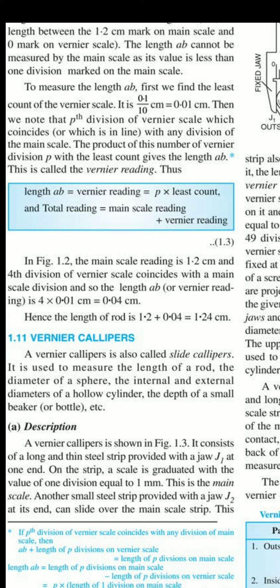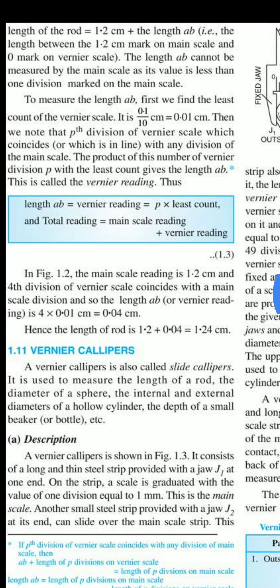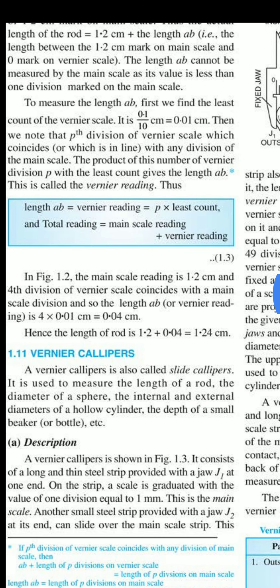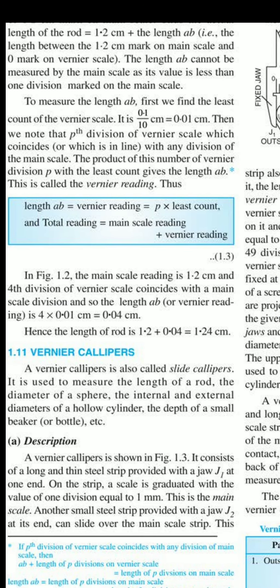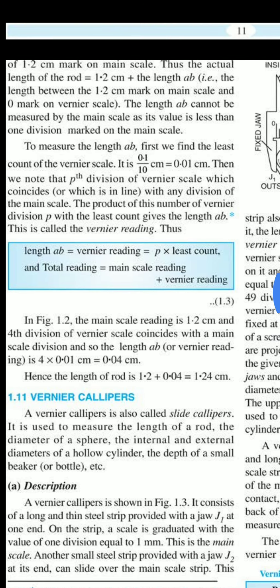So we multiplied the coinciding division with the least count. Hence, the length of rod is main scale reading plus vernier scale reading, which gives us 1.24 centimeter. So what we have done - see equation 1.3 - this is the way to measure anything.